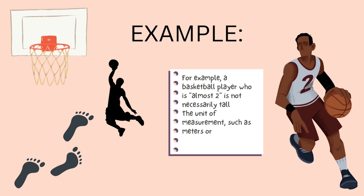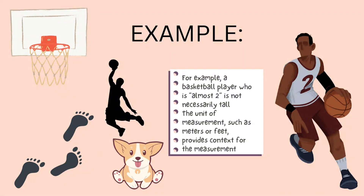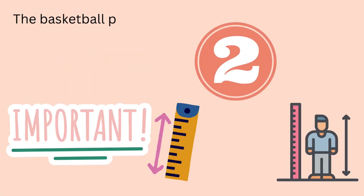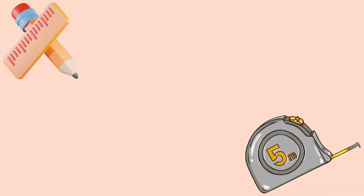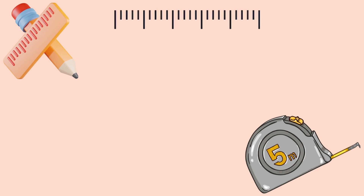The basketball player is not tall if his height is almost 2 feet — a medium-sized dog is about 2 feet. However, the basketball player is tall if he is almost 2 meters tall. 2 meters equals a height of about 6 feet and 6 inches. The words meters and feet are units. We always include a unit when making measurements.